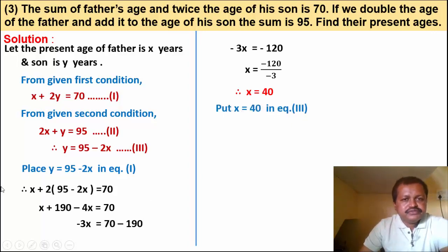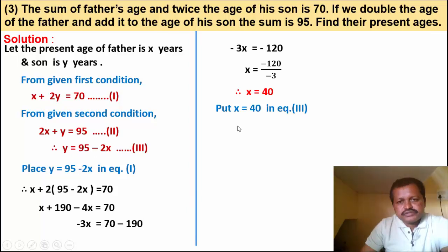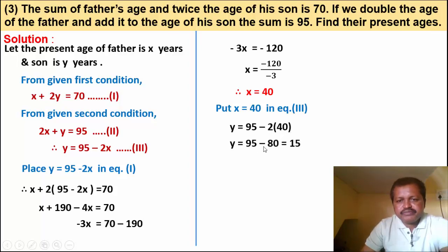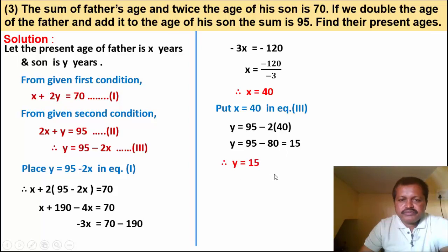Put x equal to 40 in equation 3: y equals 95 minus 2 into 40 equals 95 minus 80 equals 15. Therefore y is equal to 15. So x is equal to 40 and y is equal to 15 — the father's age is 40 and son's age is 15.